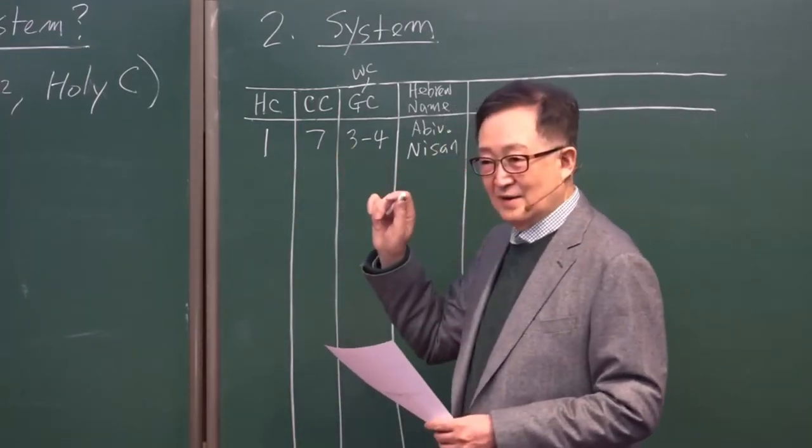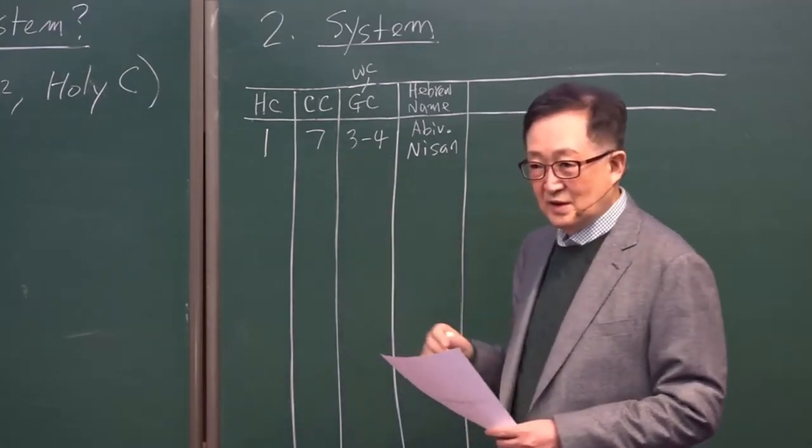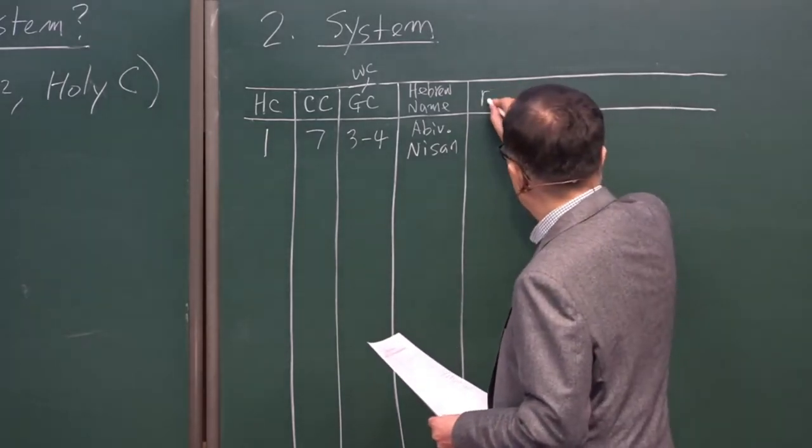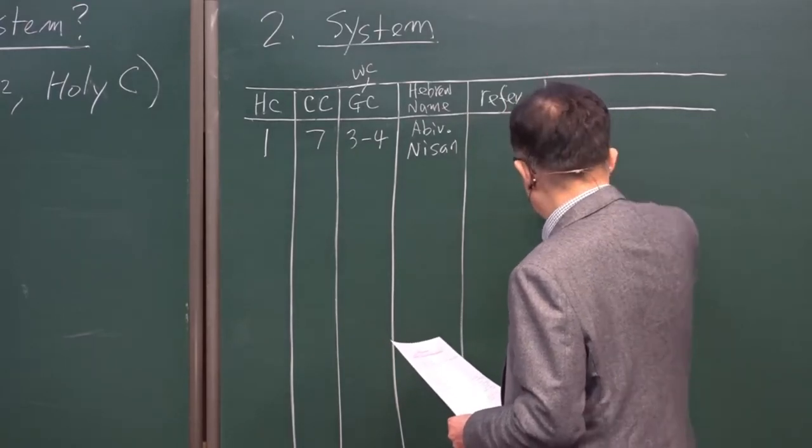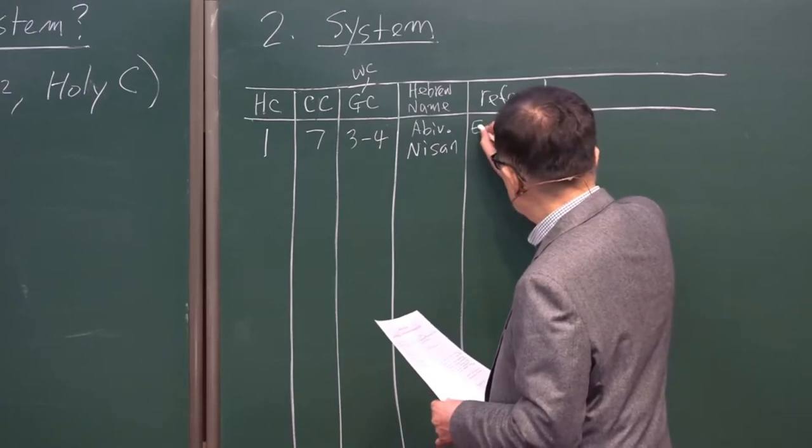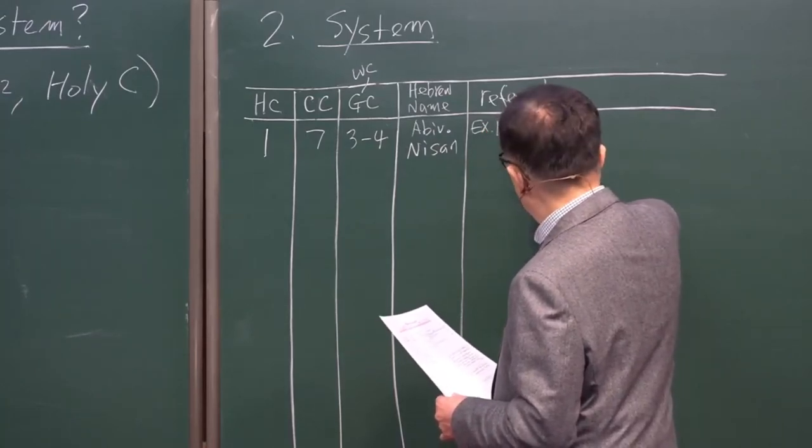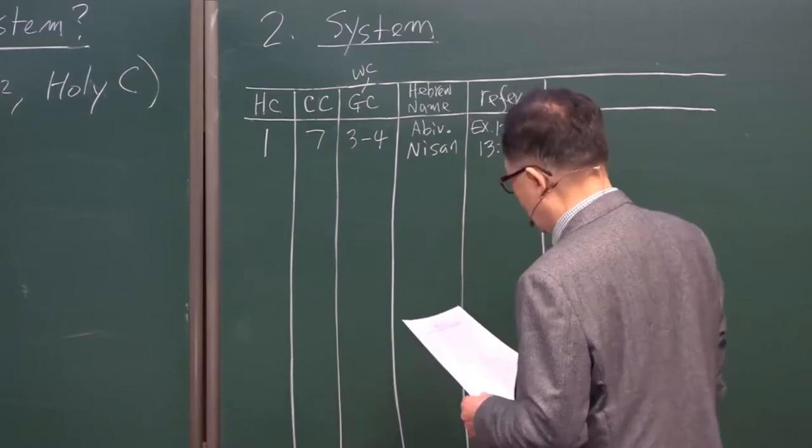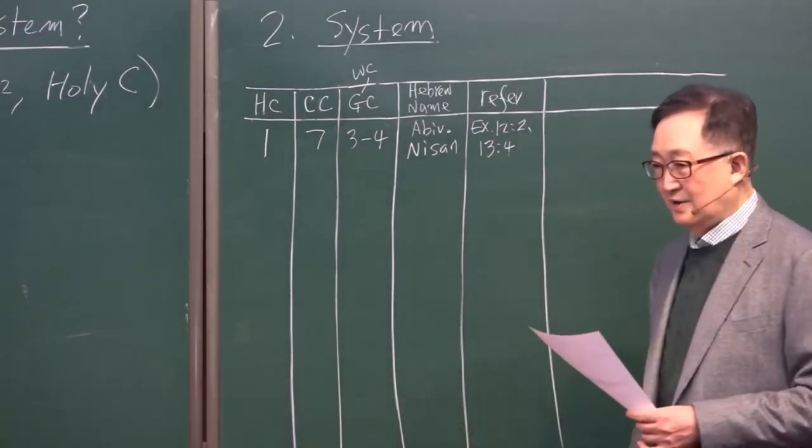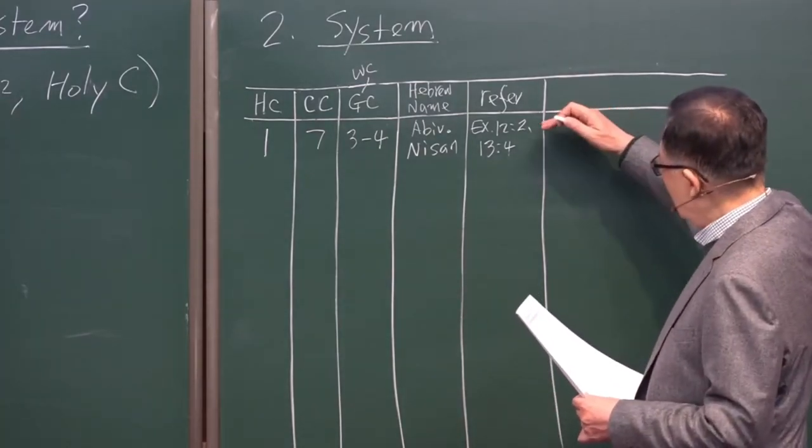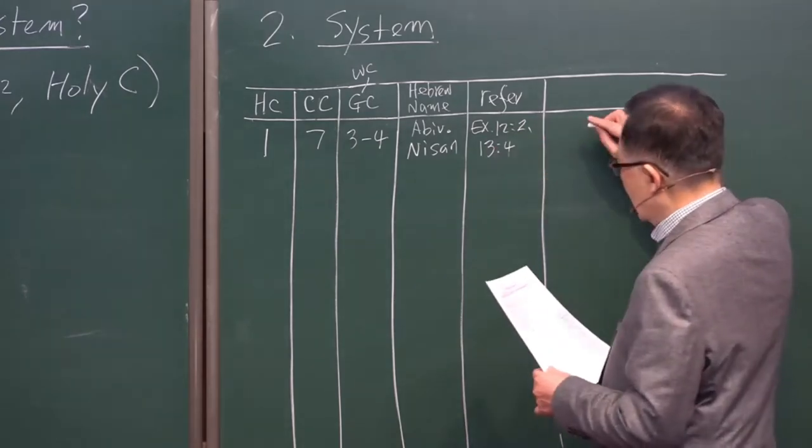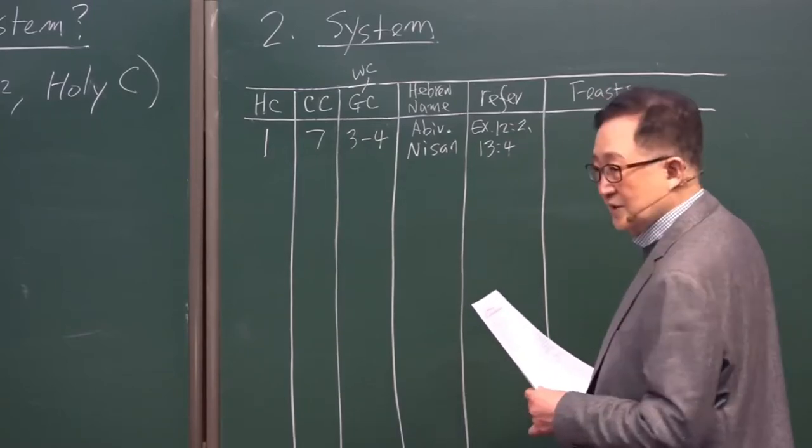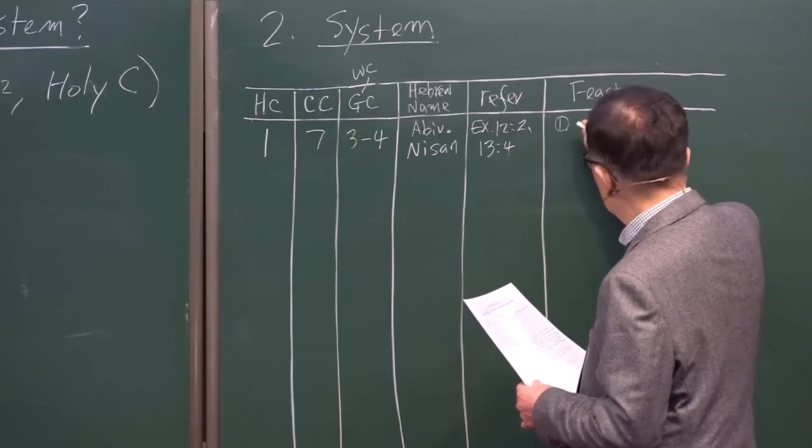It's very familiar with all of us. It's Abib. That refers to January, the first month, or March through April. Abib and Nisan, and the Bible reference is Exodus 12:2, 13:4. In this Abib month, there are three feasts.